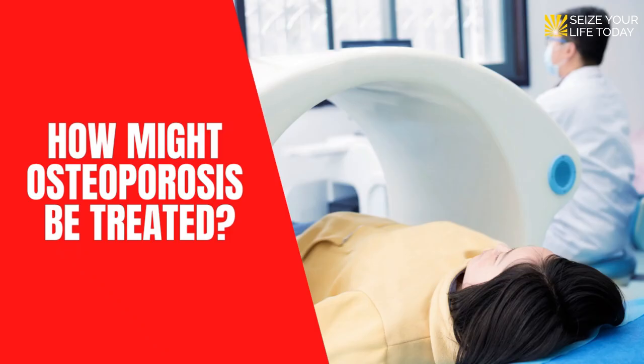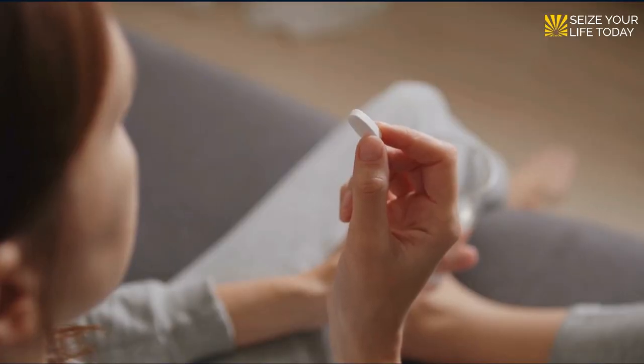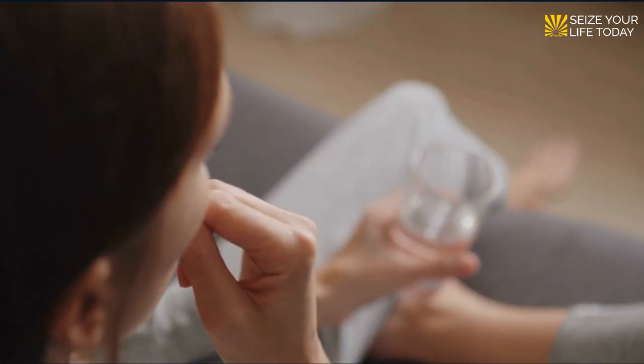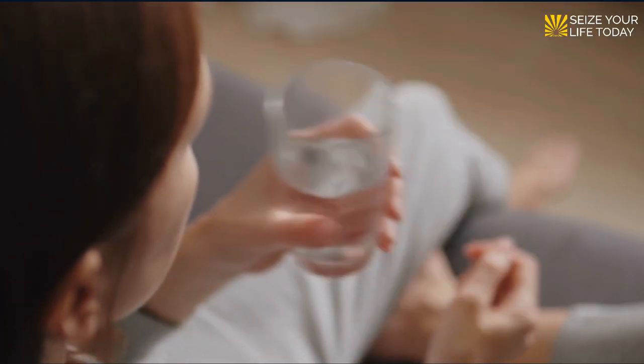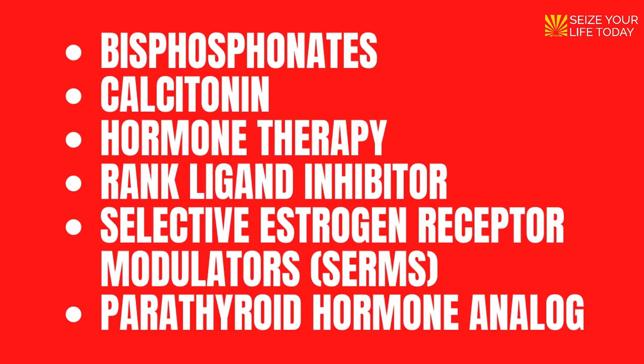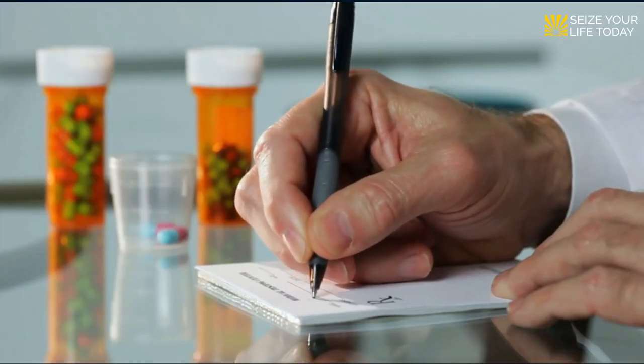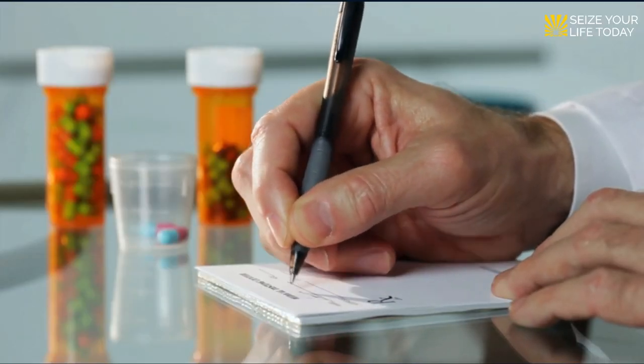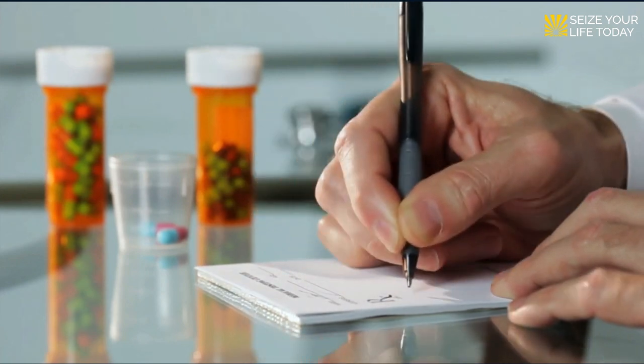How might osteoporosis be treated? There are many FDA-approved medications to choose from for the treatment of osteoporosis, including bisphosphonates, calcitonin, hormone therapy, RANK ligand inhibitor, selective estrogen receptor modulators (SERMs), and parathyroid hormone analog. A prescription is required for these medications, and medical evaluation is required before treatment.